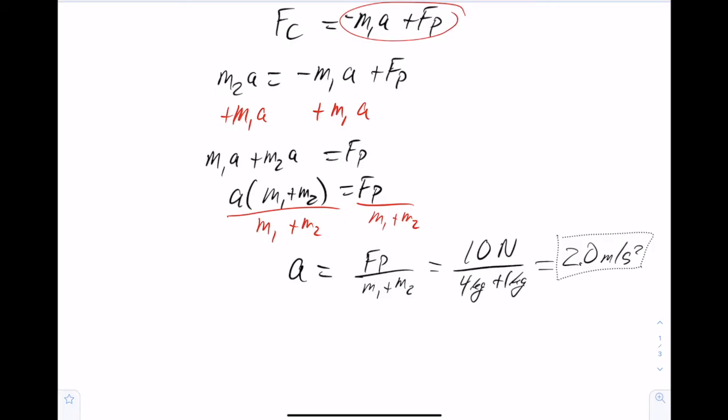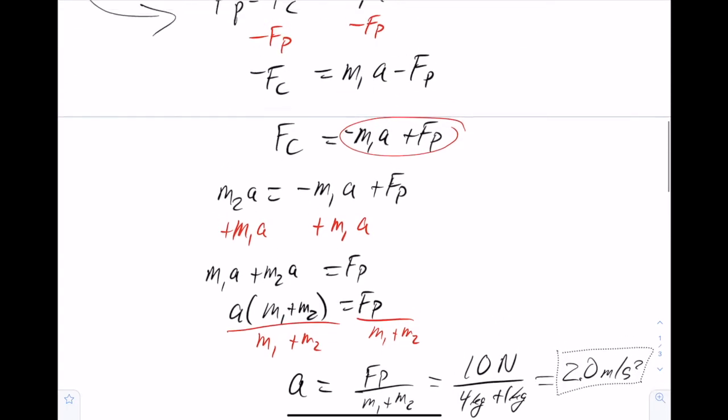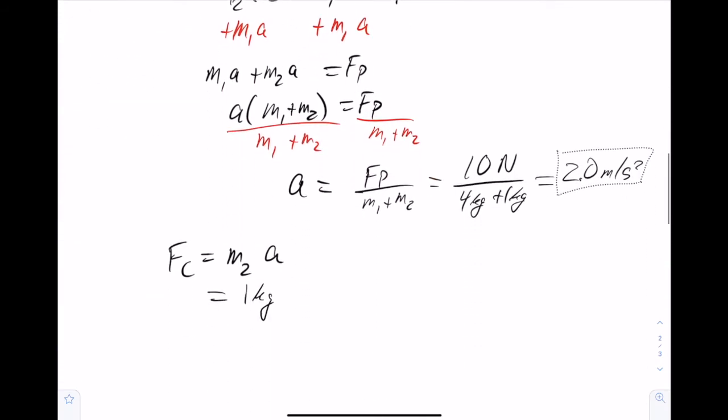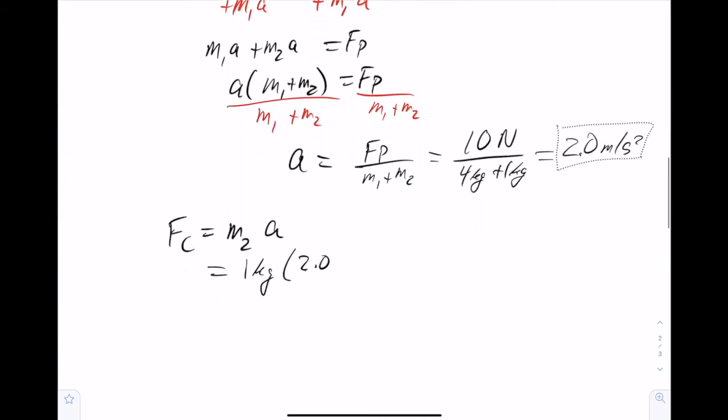Now that we have that, we can go back to either one of the original equations to solve for the contact force. So I'll go ahead and take the simpler looking equation, which was that Fc equals M2 times the acceleration. M2 was 1 kilogram, and the acceleration is 2.0 meters per second squared. So that's going to give me a contact force of 2 newtons. As we said, this is going to be less than the pushing force, because otherwise the blocks would not be accelerating to the right.